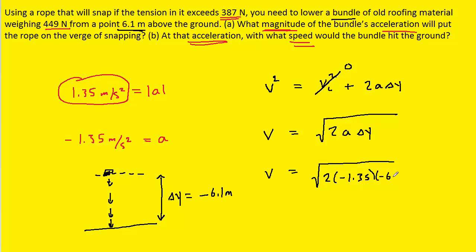So we'll plug in negative 6.1 here, we'll pick up our calculators, and when we crunch this down we get 4.1 meters per second.